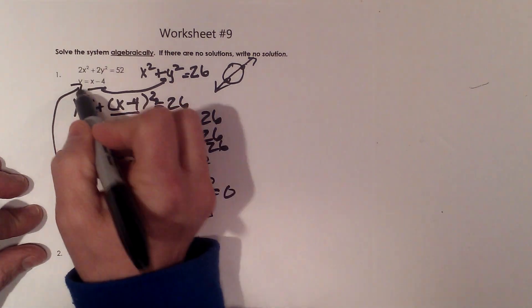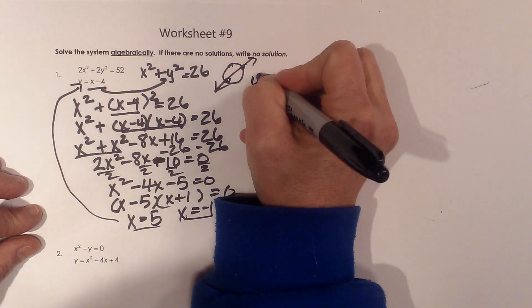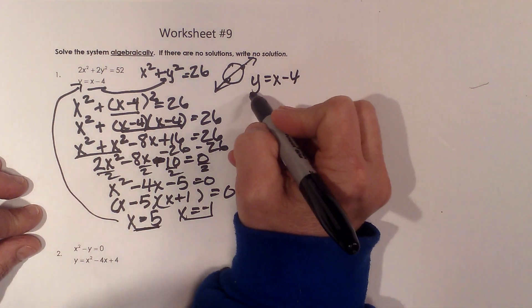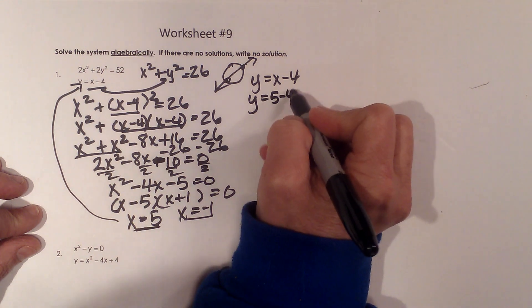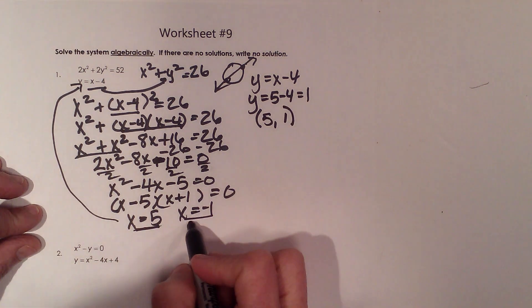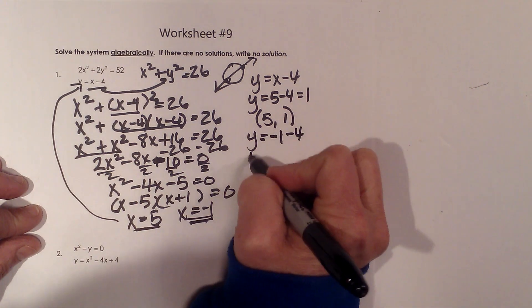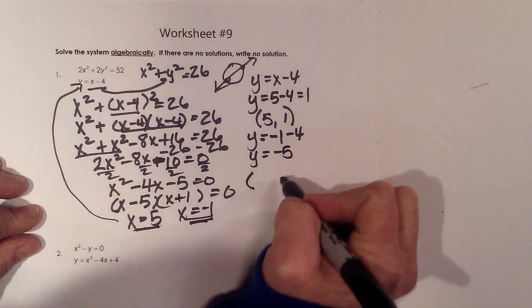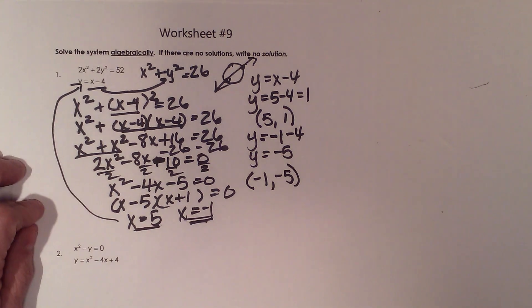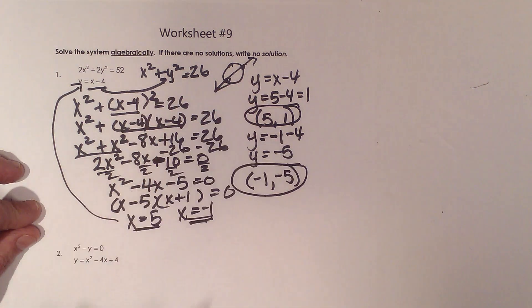I'm going to take these x coordinates and plug them in one at a time into my line. My line is y = x - 4. My first x coordinate, I'm going to plug in as 5. So y = 5 - 4, which is 1. So that means one of my answers is (5, 1). Now let's plug in -1. Y = -1 - 4, so y = -5. So that means I plugged in -1 and got out -5. These two points, (5, 1) and (-1, -5) are the points where the circle and the line cross.